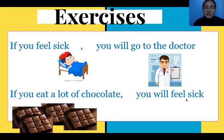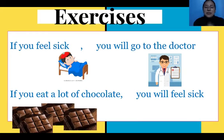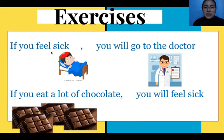Tú irás al doctor. Es una acción que tiene un resultado. Si tú comes mucho chocolate — si usted no pone la coma cuando habla el 'if' primero, está mal la oración. Don't forget that. And you will feel sick — tú te sentirás enfermo. La acción de comer mucho chocolate, como consecuencia, será que nos sentiremos enfermos. Este es el primer condicional: se unen dos oraciones — la primera en presente simple, la segunda en futuro simple — y para unirlas utilizamos la coma.